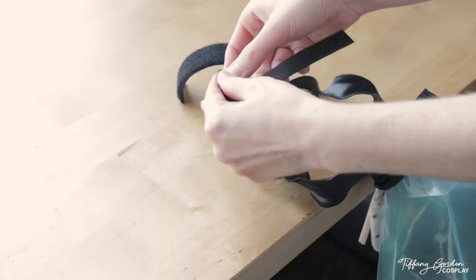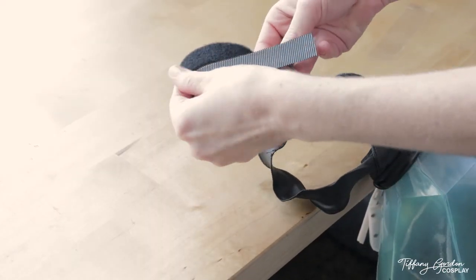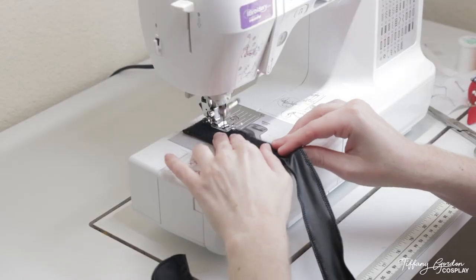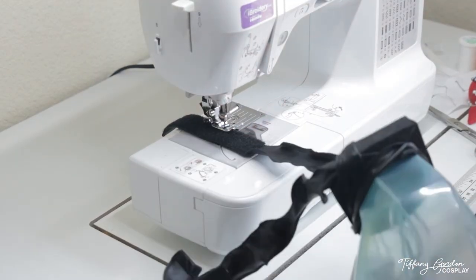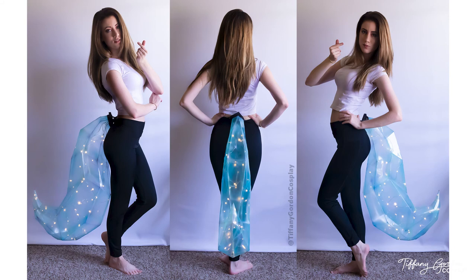I then cut two pieces of velcro and attached them to the belt straps with the adhesive, followed by sewing them so that way it had extra support. All that's left now is to attach the tail to yourself, and it's done! Yay!